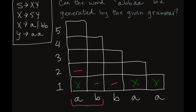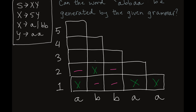Moving on to the next substring BB — looking back at our grammar, we see that X can produce BB, so we put X there. Next is BA — that's pretty obviously not in our grammar, so we put a dash there. Then AA: Y can produce AA as we can see from our grammar, so we put Y in that spot.